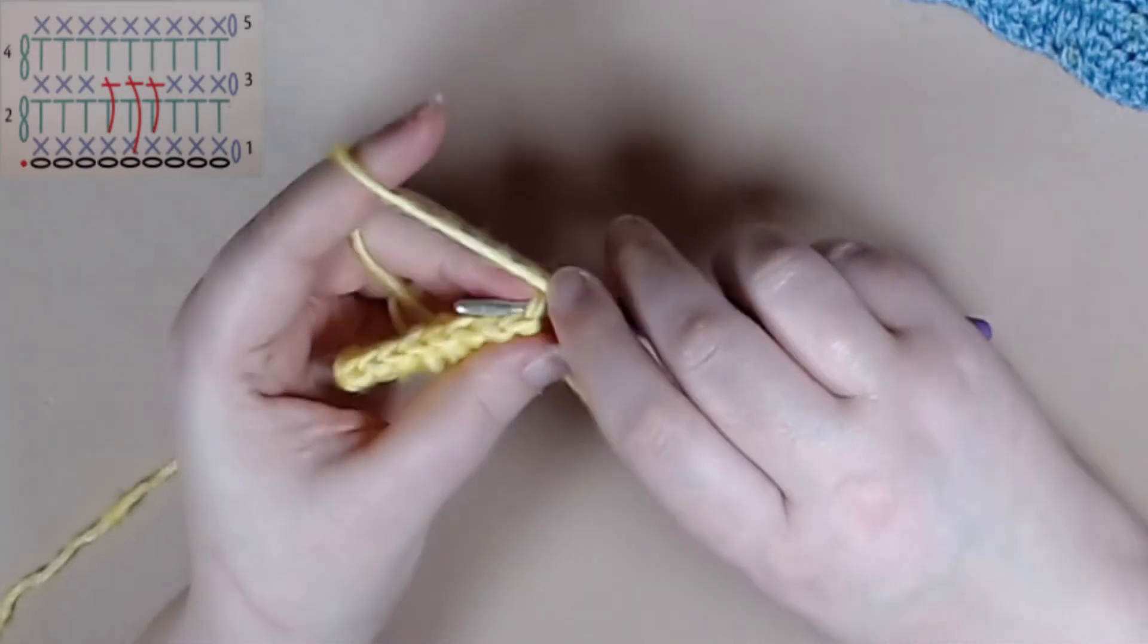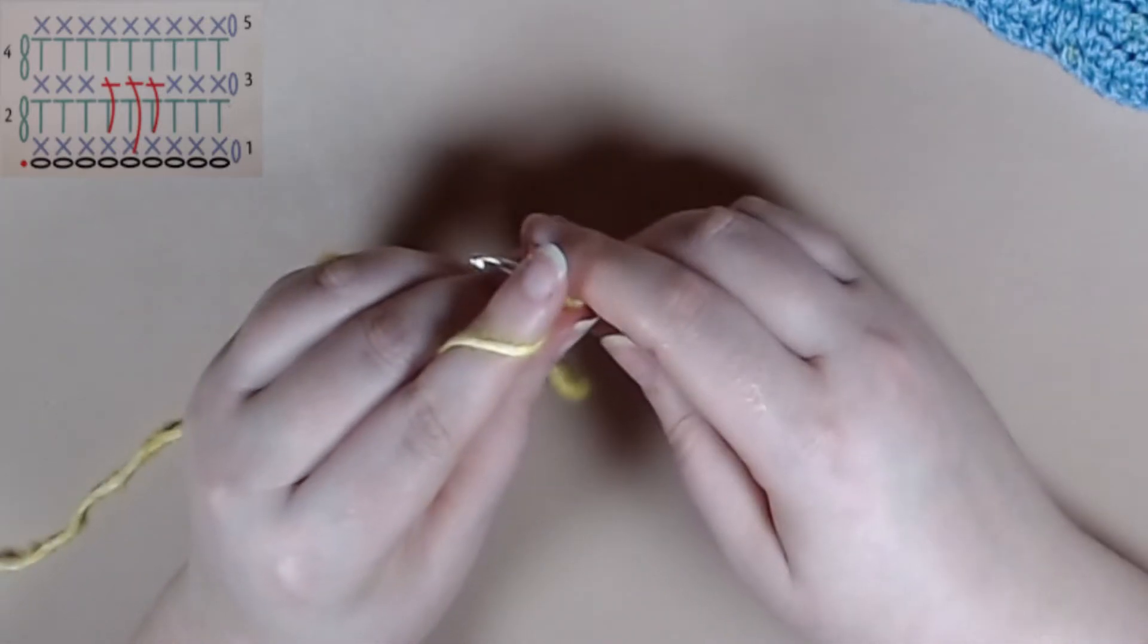So for row four you're just going to chain two and you're going to work half double crochets all the way to the end of the row.